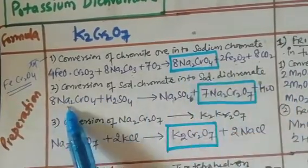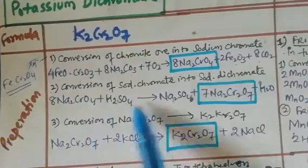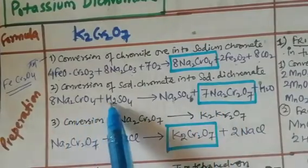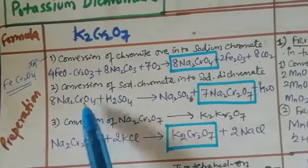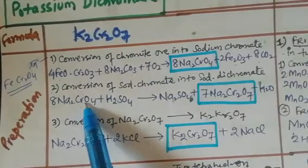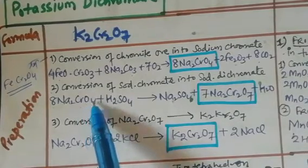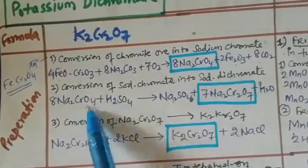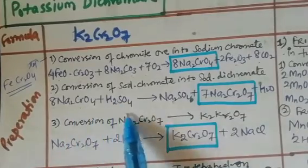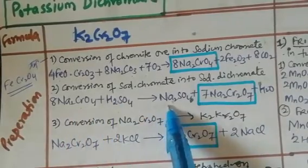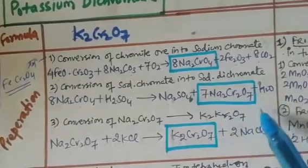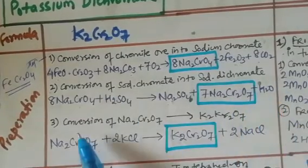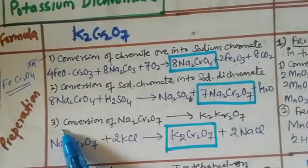In step two, sodium chromate is converted into sodium dichromate in the presence of H₂SO₄. The sulfate replaces the chromate ion, and Na₂SO₄ is taken out along with sodium dichromate ion in the presence of water.